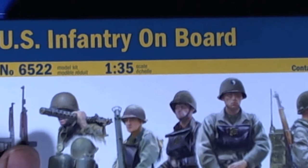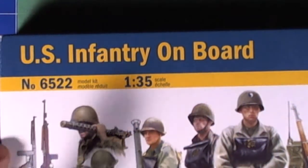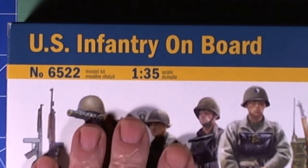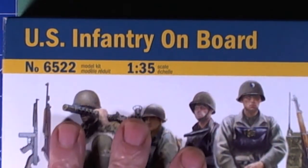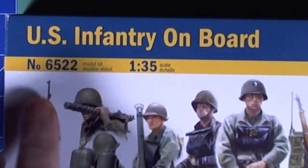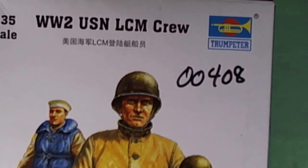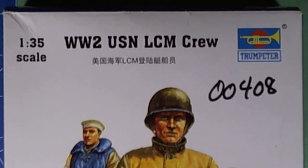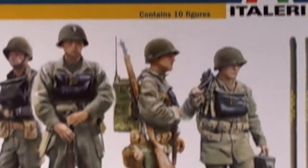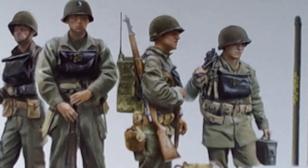It was more about getting the kits out there for folks. This is the Italeri US Infantry on board for the landing craft, kit number 6522, and it contains 10 figures. Of course the other one was the LCM crew from Trumpeter, kit number 00408. Two nice kits necessary if you intend to use your LCM for a landing.